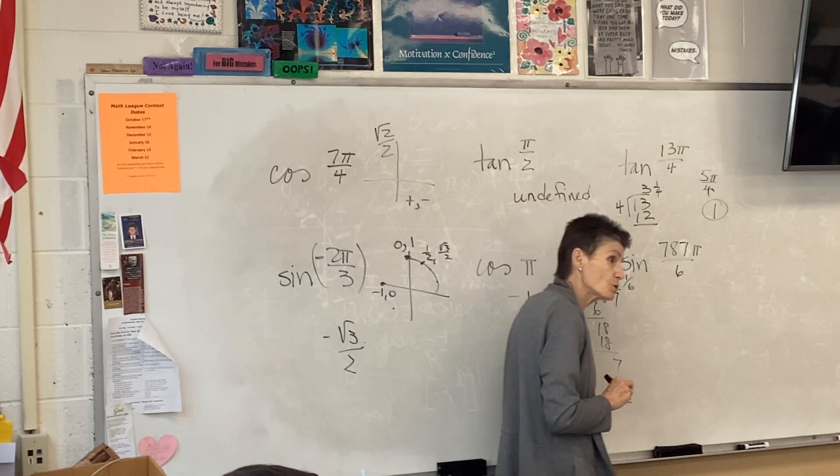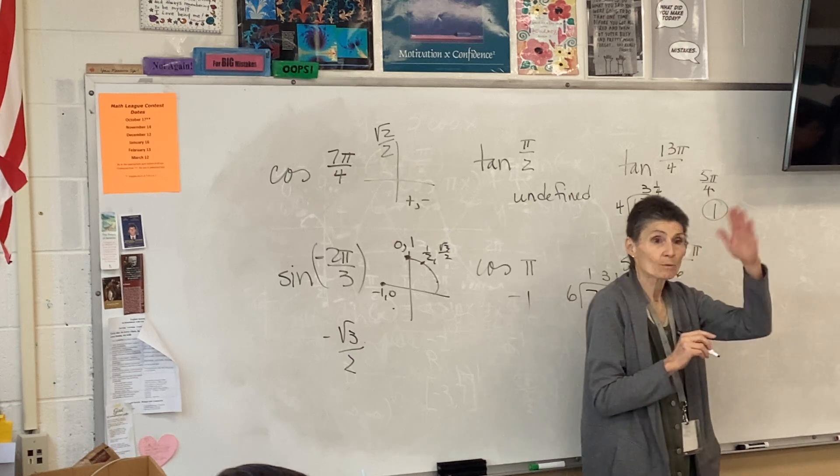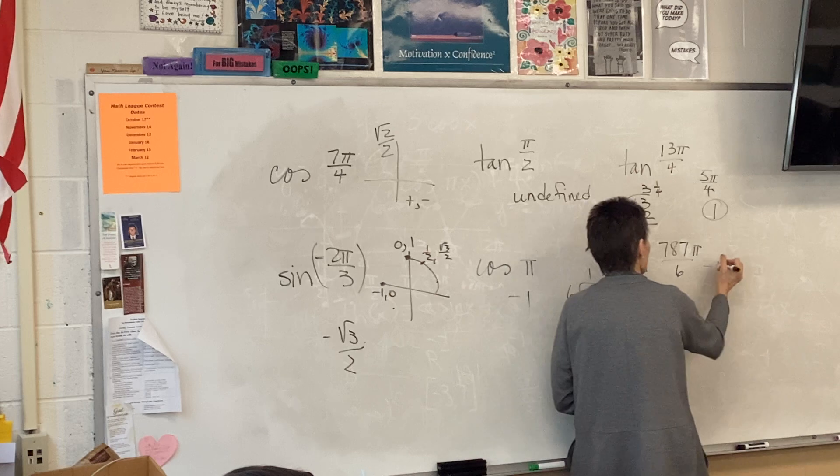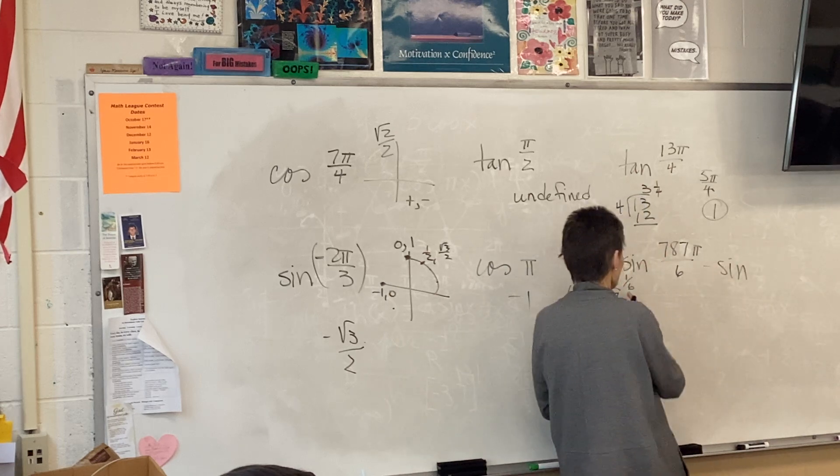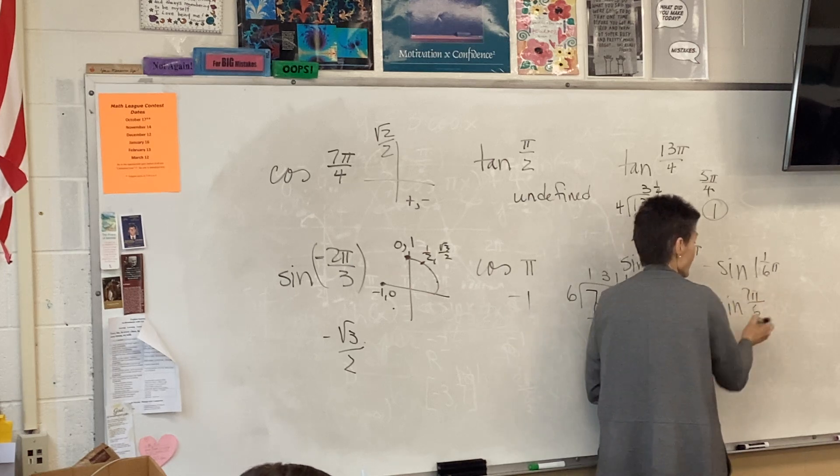130. Remember, a revolution is 2π. So you can get rid of evens. So this is the same as the sine of 1 and a sixth or 7 and a sixth.